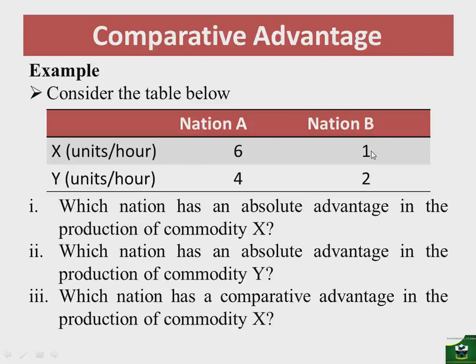Clearly, for commodity X, nation B needs six hours to produce the same amount as nation A, whereas for commodity Y, nation B only needs two hours to produce the same amount. This clearly shows that nation A has a comparative advantage in the production of commodity X compared to nation B, and nation B has a comparative disadvantage in the production of commodity X.